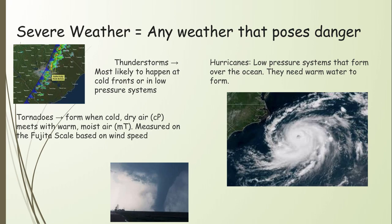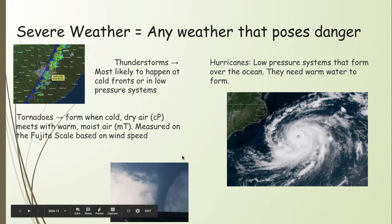Lastly, we covered types of severe weather — three types to know. Thunderstorms are the most common type of severe weather and are likely to happen at cold fronts or in low pressure systems because air is rising. A tornado forms when two different air masses meet — generally cold dry air (continental polar) meets warm moist air (maritime tropical). This creates a wind shear where air is rotating, and if that rotating air rises, it becomes a column — a tornado.